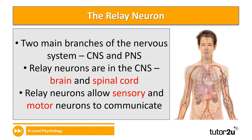In terms of function, what relay neurons do is allow motor neurons and sensory neurons to communicate with one another — they pass signals between these two neurons. Interestingly, the majority of relay neurons don't need a myelin sheath, as the signal doesn't need to travel far. Their only function is to bridge the gap between the motor and the sensory neuron, so the impulse doesn't need to be sped up.